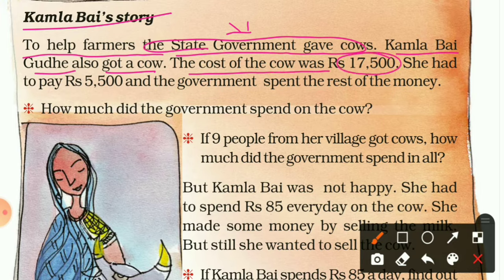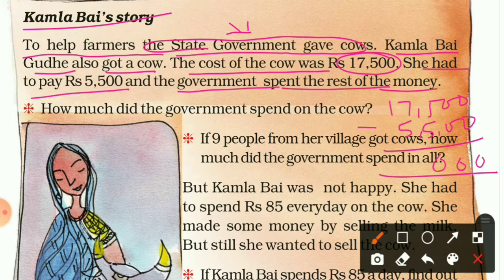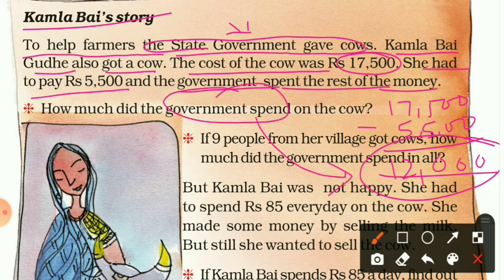The government spent the rest of the money. The cost of the cow is seventeen thousand five hundred and Kamala Bai had to pay five thousand five hundred rupees. So the remaining amount is: 17,500 − 5,500. Zero minus zero is zero, seventeen minus five is twelve — so the government is spending twelve thousand rupees on one cow.